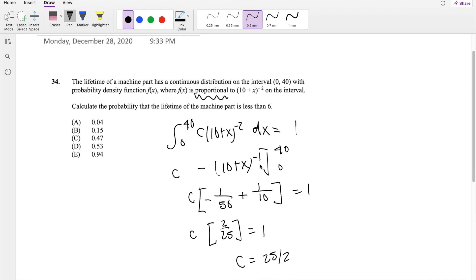Okay, so now we know what that is. We can just find the probability that the lifetime of a machine is less than 6. So if it's less than 6, we know that the range is 0 to 40. So less than 6 is this part right here.